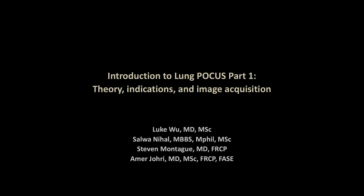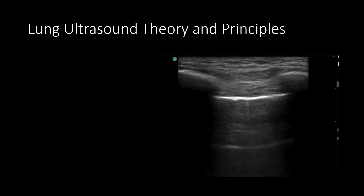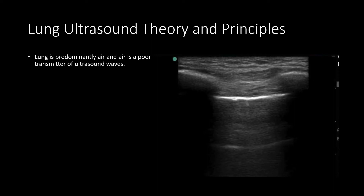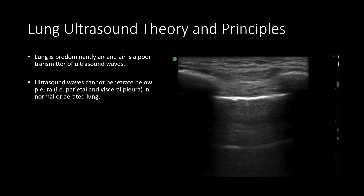Moving on to lung ultrasound, we'll be discussing the theory and how to acquire images and interpret them. Unlike cardiac and abdominal ultrasound, lung ultrasound is unique in that the majority of its interpretation is based on artifact and not real anatomy. The reason behind this is that lung is predominantly air, and air is a poor transmitter of ultrasound waves. A famous saying is: air is the enemy of ultrasound, and this is certainly the case.